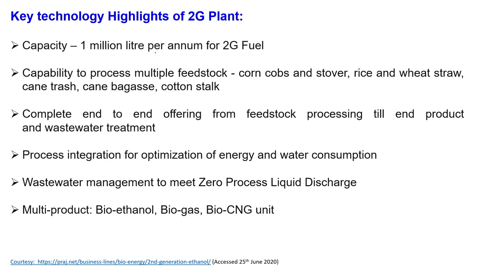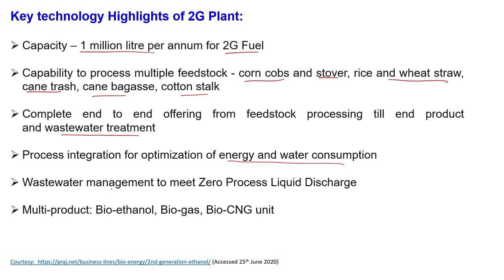The overall capacity of this plant is 1 million litres per annum for 2G fuel. It has capacity to process multiple feedstocks: corn stover, rice and wheat straw, cane trash, cane bagasse, and cotton stalk. It provides complete end-to-end offering from feedstock processing to end-product and wastewater treatment. Process integration is applicable for optimization of energy and water consumption, and there is zero process liquid discharge — whatever is generated within the plant should have no discharge to the environment. Multiple products are obtained: bioethanol, biogas, and there is also a procedure for a bio-CNG unit.